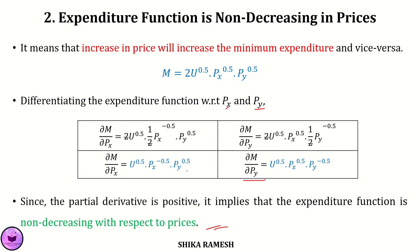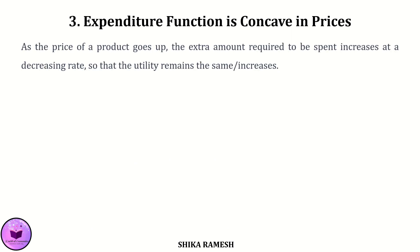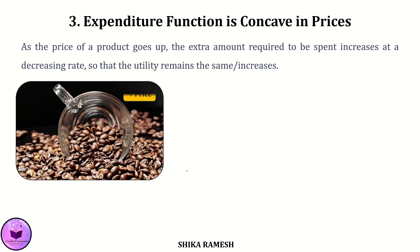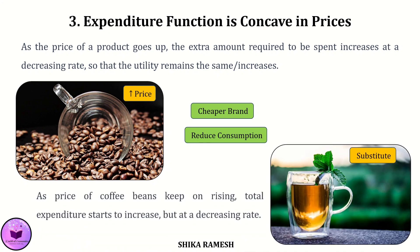The third property is that the expenditure function is concave in prices. This simply means that as the price of a product goes up, the extra amount of money you have to spend increases at a decreasing rate. For example, if the price of coffee beans starts to increase, you might buy a cheaper brand, use them more sparingly, or switch to tea. As the price keeps increasing, you find more ways to adapt, so the total extra money spent slows down relative to the price increase.